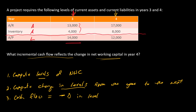That gives us 3 thousand for year three. Then in year four: 17 and 8 is 25 thousand minus 12 thousand equals 13 thousand. So here we have net working capital levels — 3 thousand in year three and 13 thousand in year four.